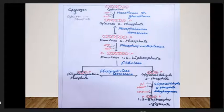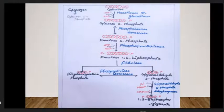The kinase reaction is very important and requires magnesium. The isomerization of glucose-6-phosphate leads to fructose-6-phosphate, and then another kinase reaction converts it to fructose-1,6-bisphosphate. The aldolase reaction is very important.